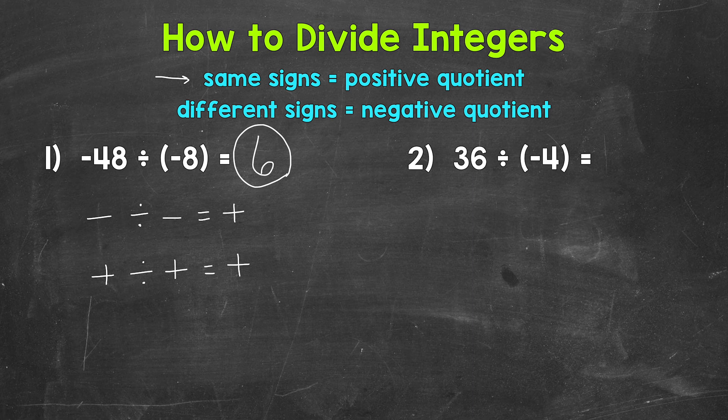Let's move on to number 2 where we have 36, a positive 36, divided by negative 4. So let's think of this as 36 divided by 4, which is 9. Now we need to determine if that quotient is positive or negative. Well, we have a positive divided by a negative, so we have different signs. Different signs, that is a negative quotient. So negative 9 there. 36 divided by negative 4 equals negative 9.